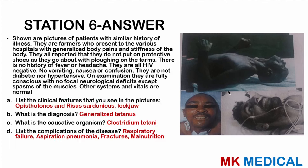Here comes the answer. We can see arching of the back — referred to as opisthotonus. There is a characteristic grin referred to as risus sardonicus. The jaws are also locked — trismus. There are also generalized muscle spasms. The diagnosis is generalized tetanus. The causative organism is Clostridium tetani. Complications include respiratory failure, aspiration pneumonia, fractures due to persistent muscle contractions, and malnutrition because the patient is not able to feed well.